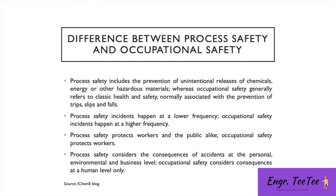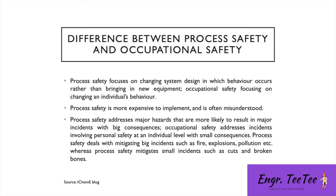Occupational safety tends to protect workers in the immediate vicinity, while process safety can affect both workers and the public. For example, the recent incident in Lebanon affected not just those near the storage site but had far-reaching effects felt in other countries. Process safety also considers the environment and business impact, not just human beings in the area.